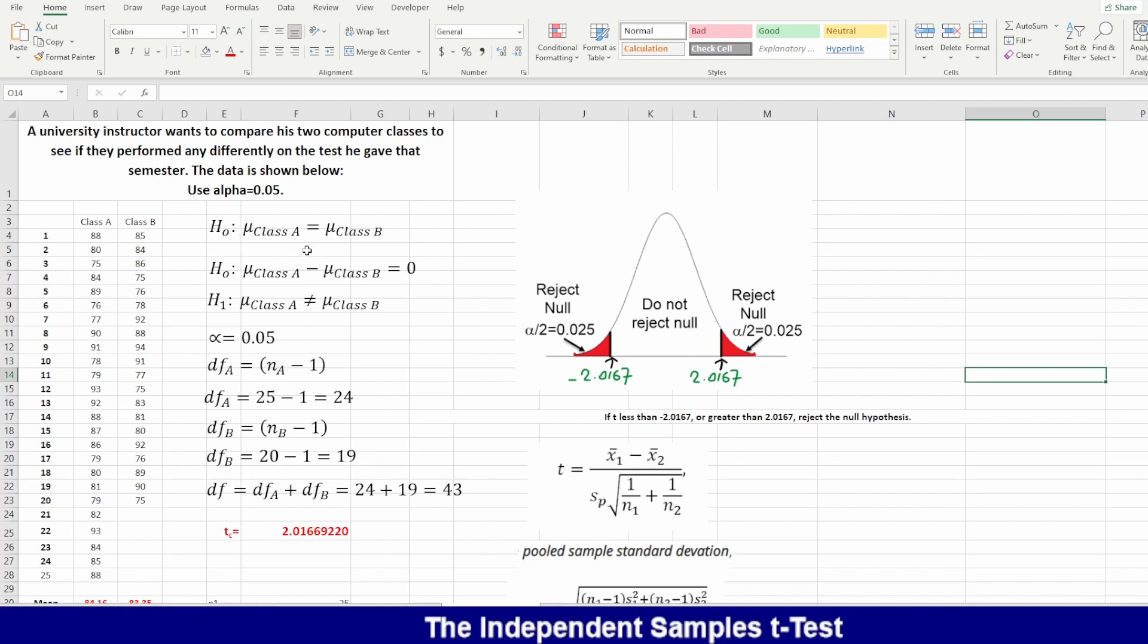The null hypothesis: we assume that the mean of class A equals class B, or there is no difference between the two classes. The alternative will be no, there is a difference. And since there is the sign of not equal, we assume this will be two tails per tail.